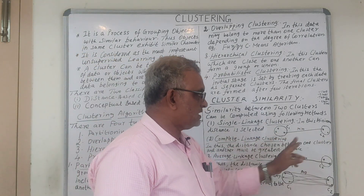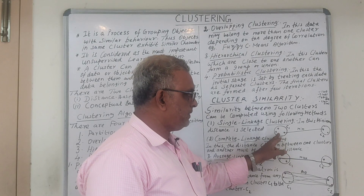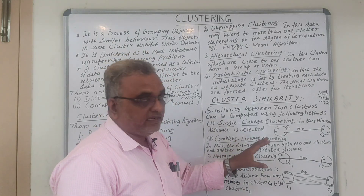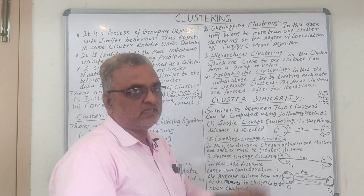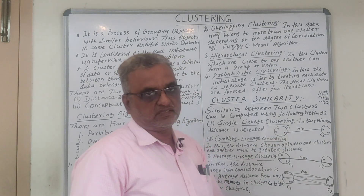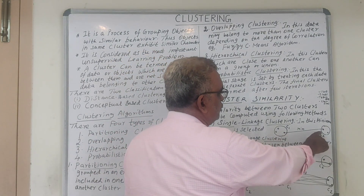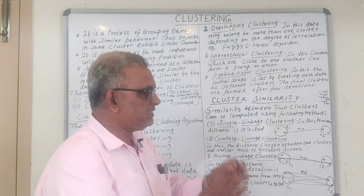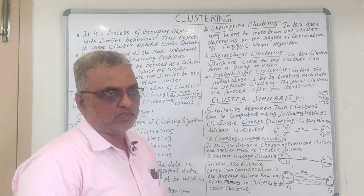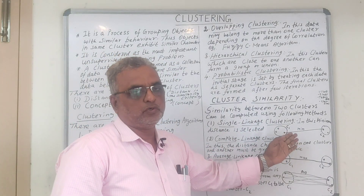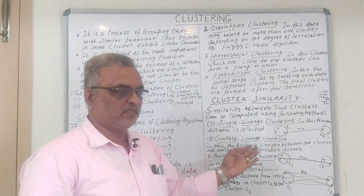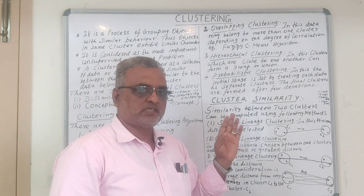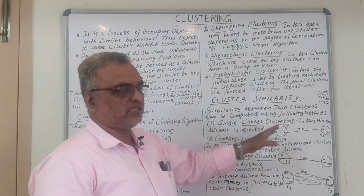In single linkage clustering, consider cluster C1 with three members and cluster C2 with two members. The criteria is selecting the minimum distance between members of different clusters. The two members that are comparatively closer take the minimum distance. The distance can be calculated using the Euclidean distance formula: d = √((x2 − x1)² + (y2 − y1)²).